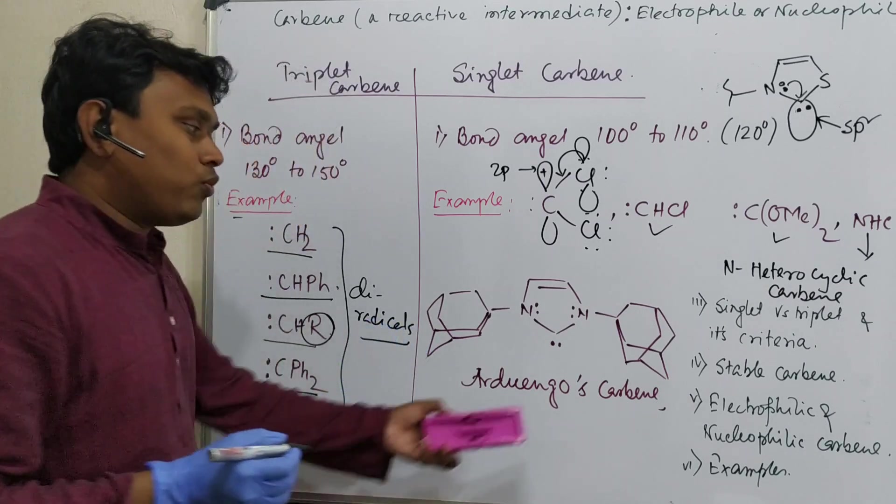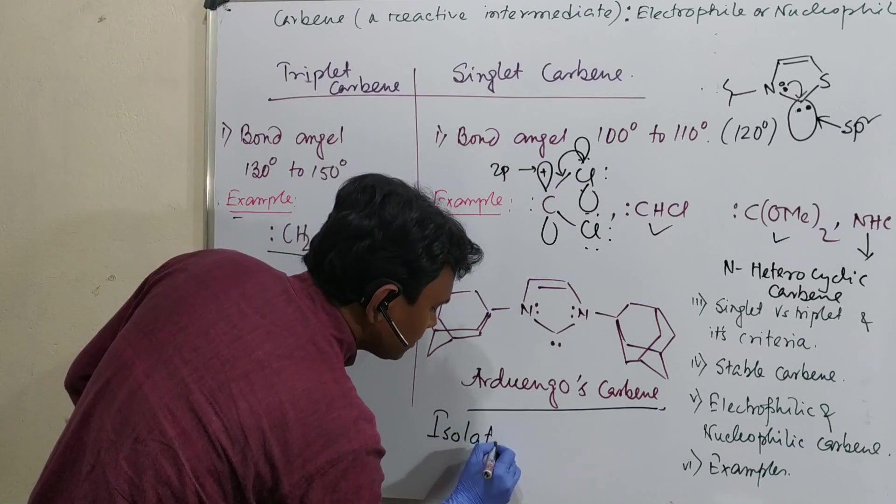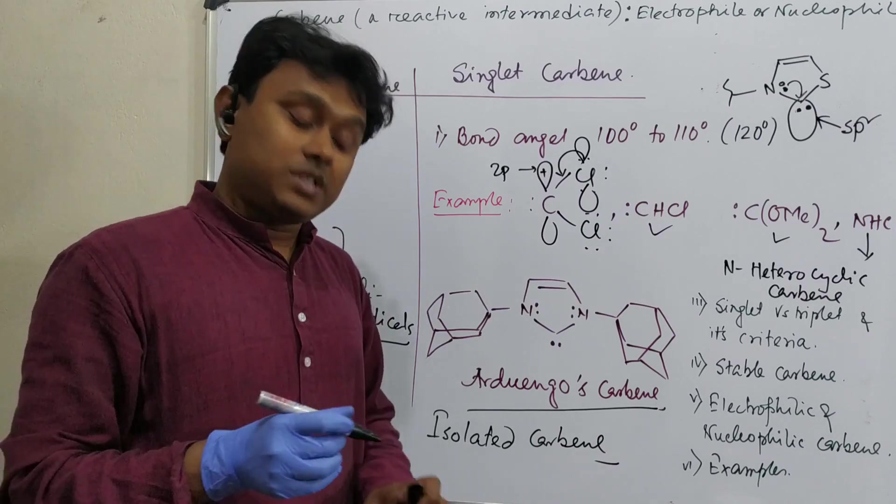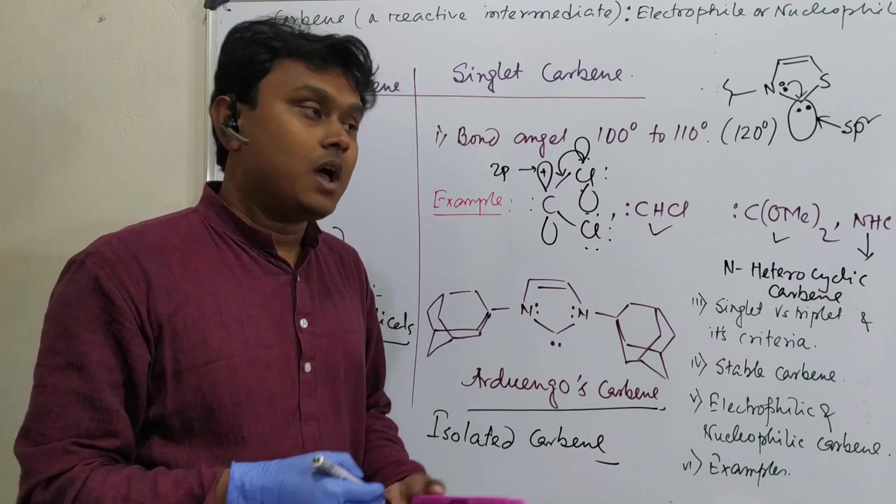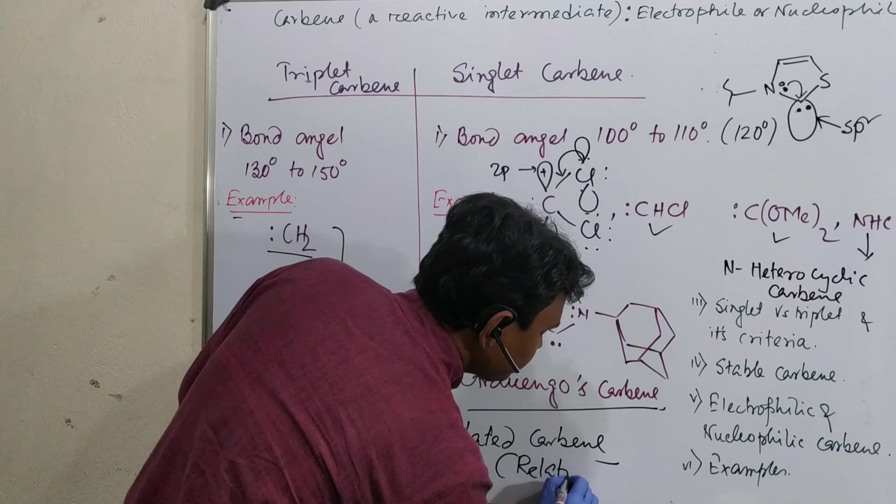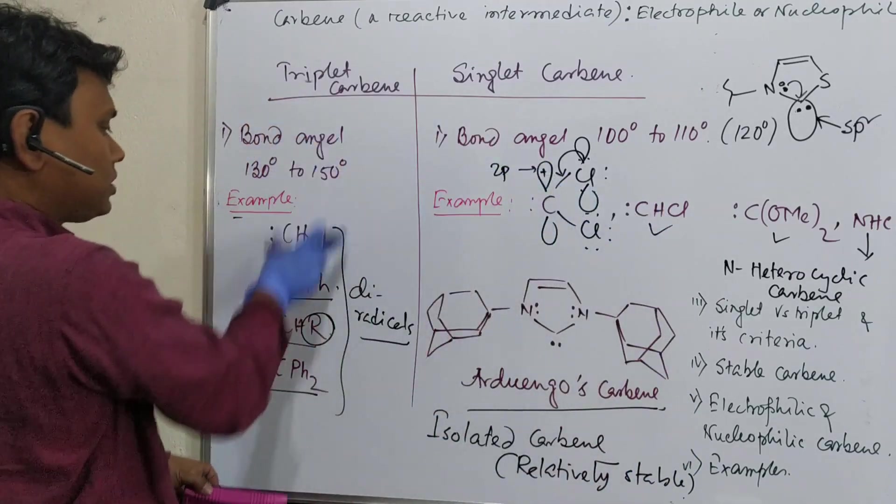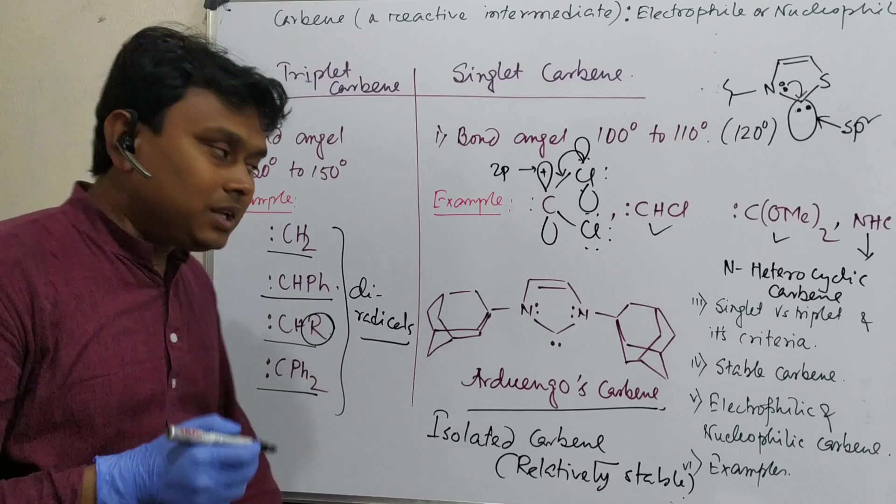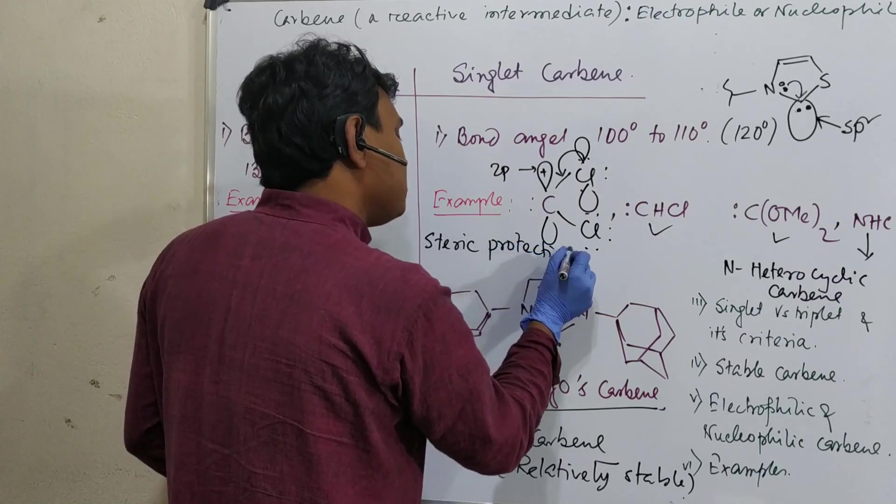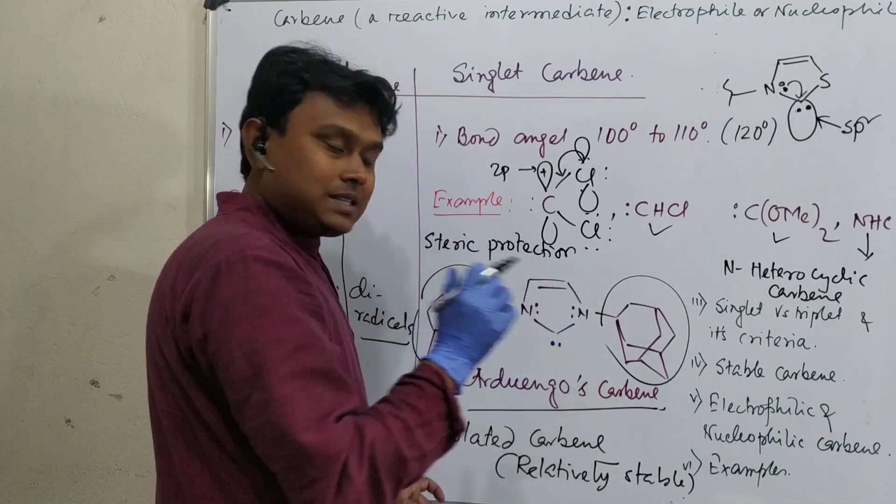This is Ardengus carbene. Why is this so much special? Because this is isolated carbene. Why interesting? As I told, carbene is a reactive intermediate, so it is an electron deficient species, highly reactive. So isolated means relatively stable compared to other examples like CCL2. Why is it stable? Because of steric protection. This is adamantyl group, these are too big groups, so that is why this carbene is stabilized.